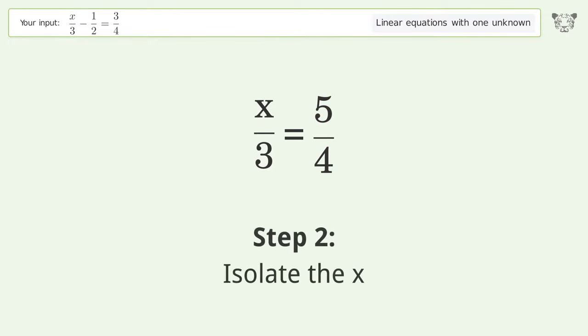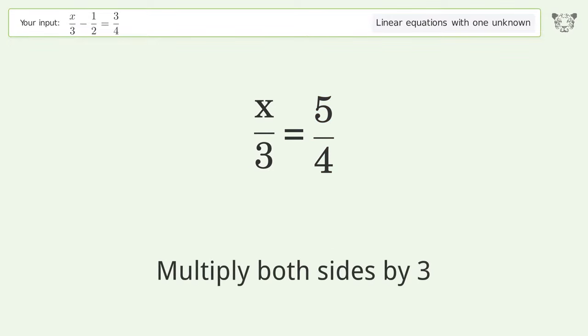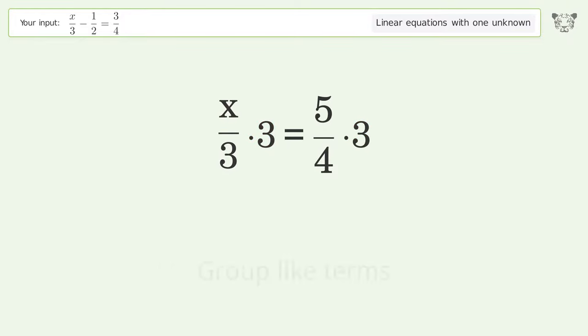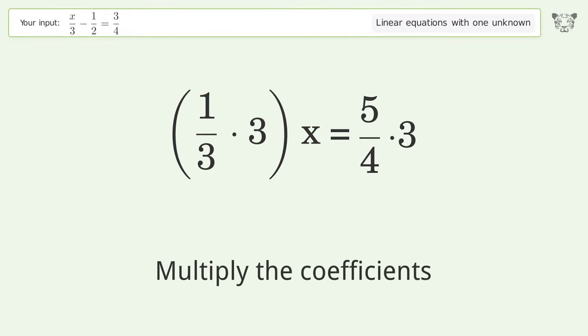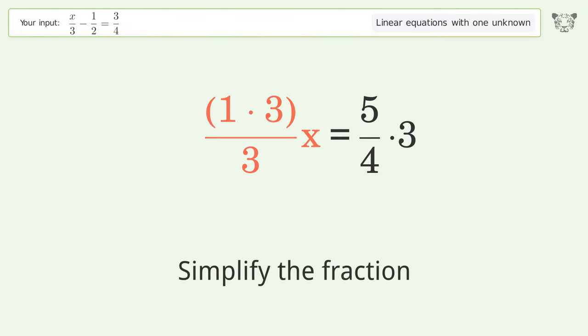Isolate the x. Multiply both sides by 3. Group like terms. Multiply the coefficients. Simplify the fraction.